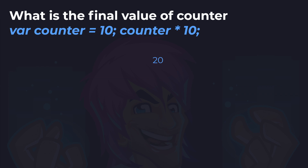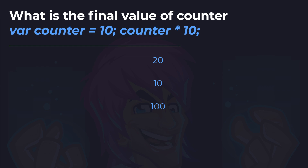And let's do one more. What is the final value of counter here? Is it 20, 10, or 100? Look at the syntax very carefully. And the answer is 10. The first statement, var counter equals 10, declares and assigns the value 10 to counter. The second statement is again an expression — it's not an assignment. There is no counter equals, there's no equals sign. Therefore counter is unchanged. Counter times 10 would produce a result of 100, but we aren't assigning that value back to counter, so it goes nowhere.